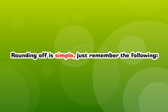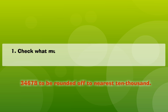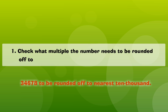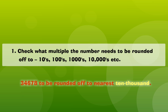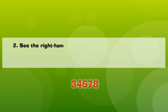Rounding off is simple. Just remember the following: Check what multiple the number needs to be rounded off to — tens, hundreds, thousands, ten thousands, etc. Then see the right-hand side digit of the multiple.